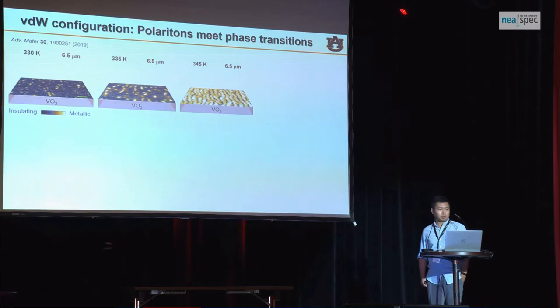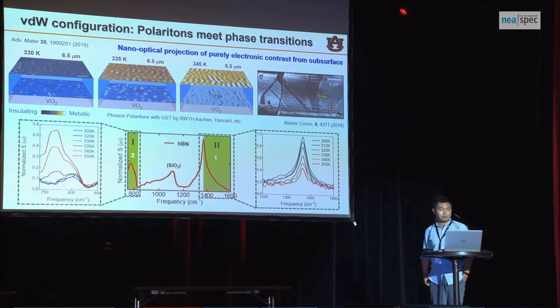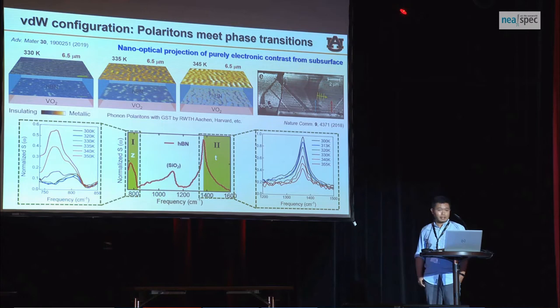Another example is combining phase-change materials with phonon polaritonic 2D materials. For example, using VO2 — pioneered by Franz Keilmann and other peers in the field — if you increase the temperature, you get an insulator-to-metal transition. By placing our 2D polaritonic materials on top, you can utilize this phase change to control polaritonics using VO2 and other phase-change materials like GST.